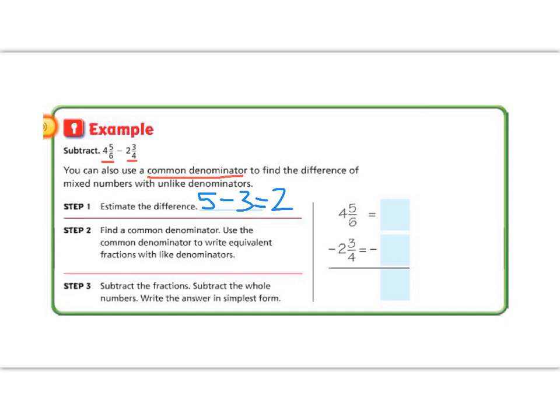Now let's find a common denominator and subtract. Let's list out the numbers that 6 and 4 have in common. 4, 8, 12, 16, 20, 24.